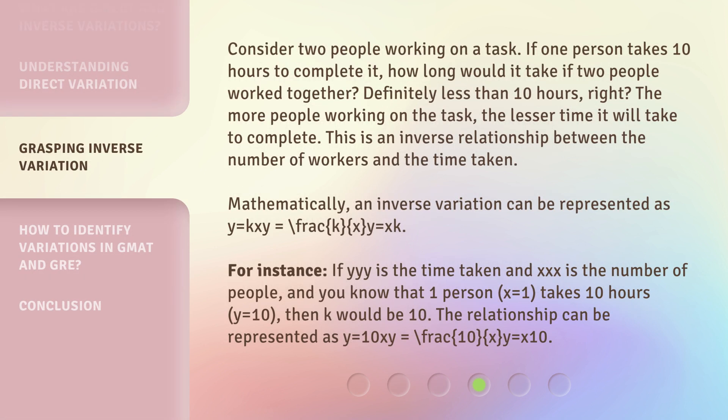Consider two people working on a task. If one person takes 10 hours to complete it, how long would it take if two people worked together? Definitely less than 10 hours, right? The more people working on the task, the lesser time it will take to complete. This is an inverse relationship between the number of workers and the time taken.